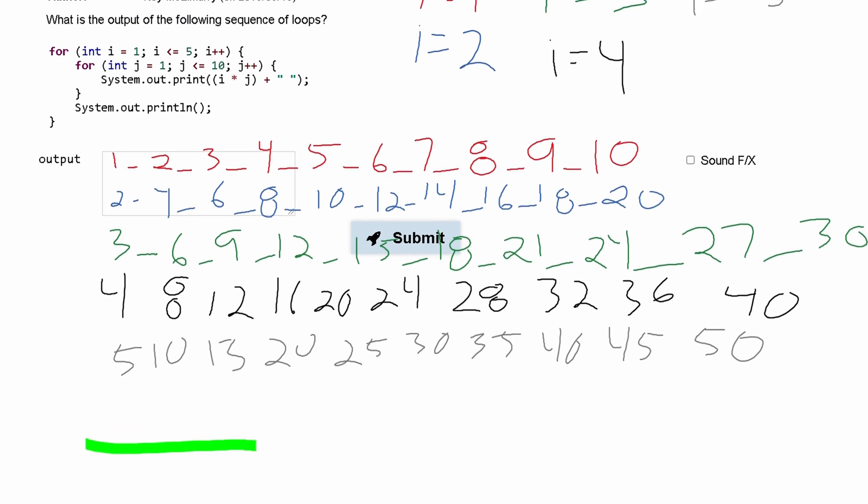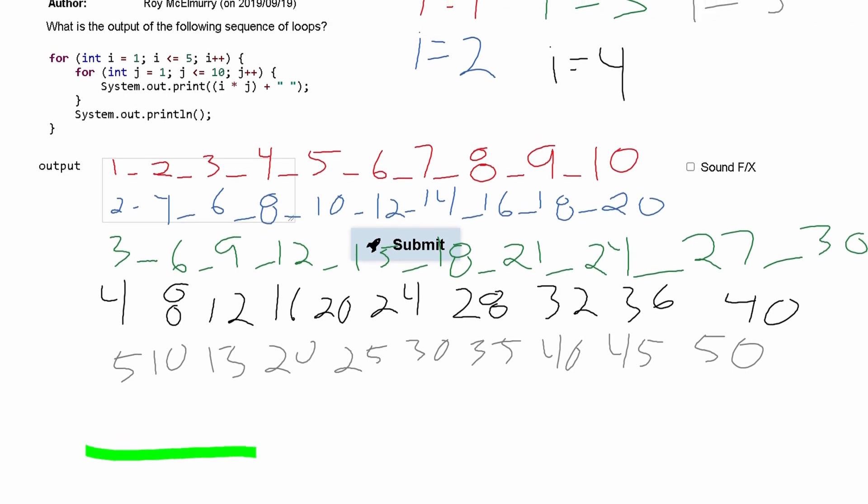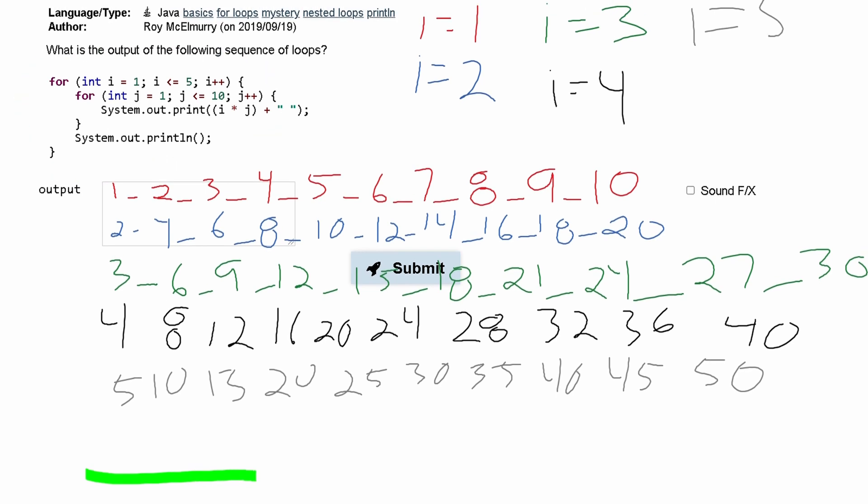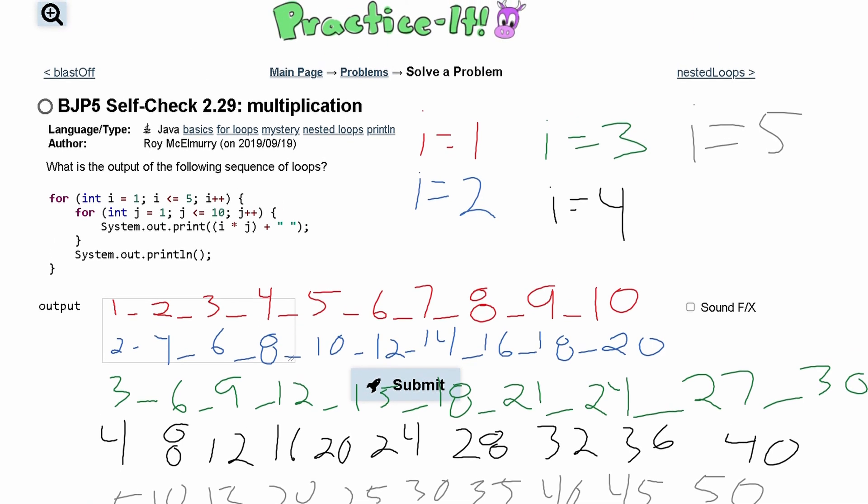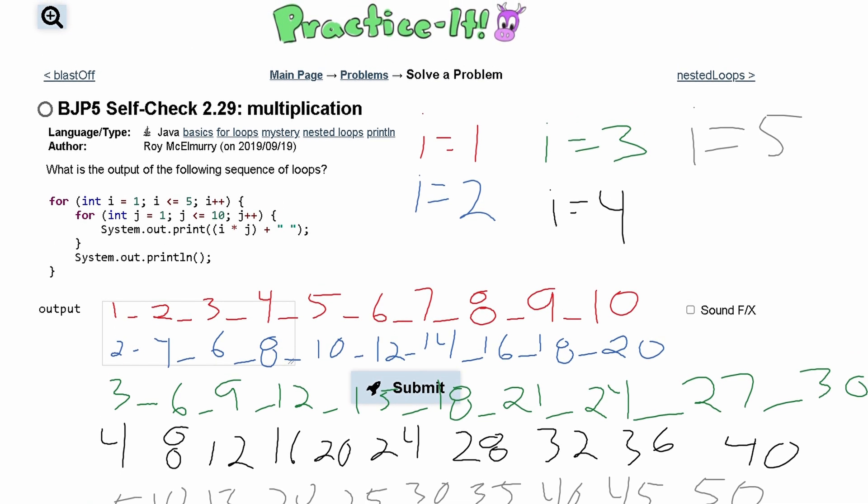But I don't think that's going to be included in the output. This output we've written right here is what would be outputted if we were to run this code. So that is the final solution for Practice-It 2.29.